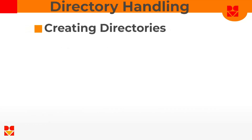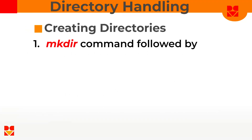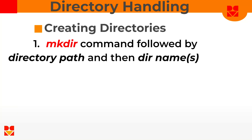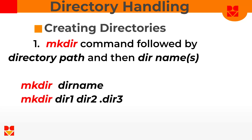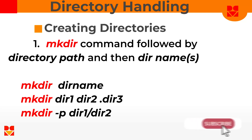To create a directory in Linux, you use the mkdir command followed by the directory name you are interested in. You can do mkdir and then the directory name, or you can do mkdir and then pass all the names you're interested in — mkdir directory1 directory2 directory3. You use a dot before the directory name to create a hidden directory. You can also make use of the mkdir -p option to create a parent directory before the child directory.